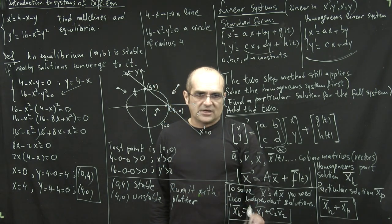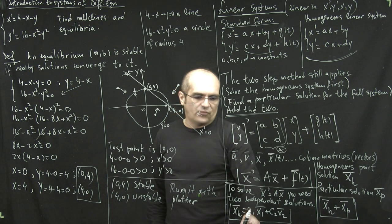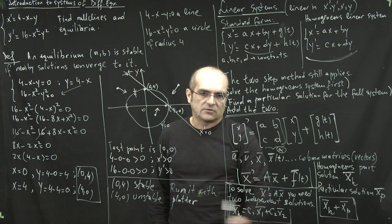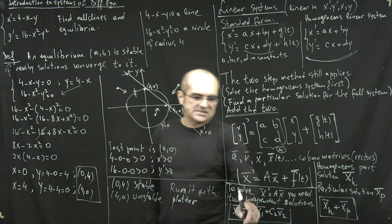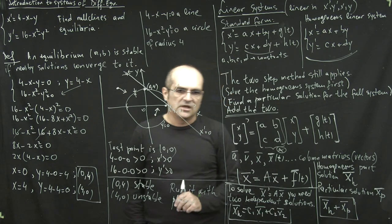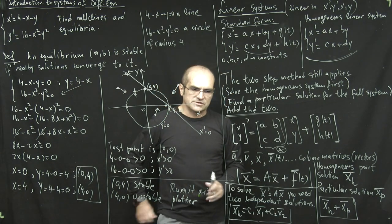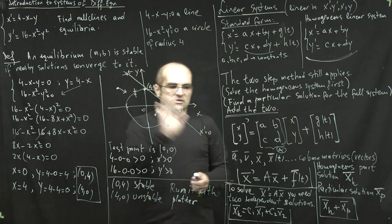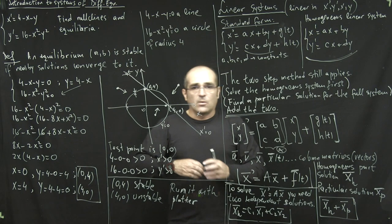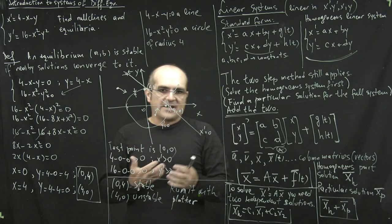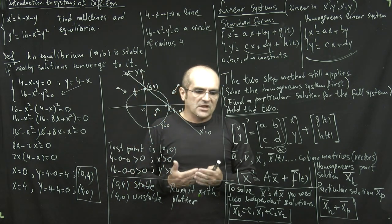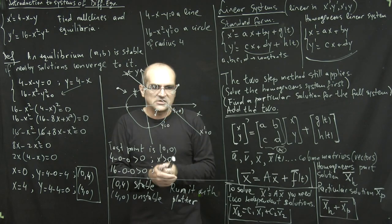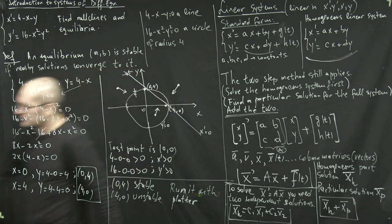If you look at the formula sheet, you can anticipate that the formula for the homogeneous solution will be a combination of two independent solutions. Let's finish this part with an actual example where I'll give the system and its solution, and we'll plug in to verify it using matrix notation. Stay tuned for the third part.